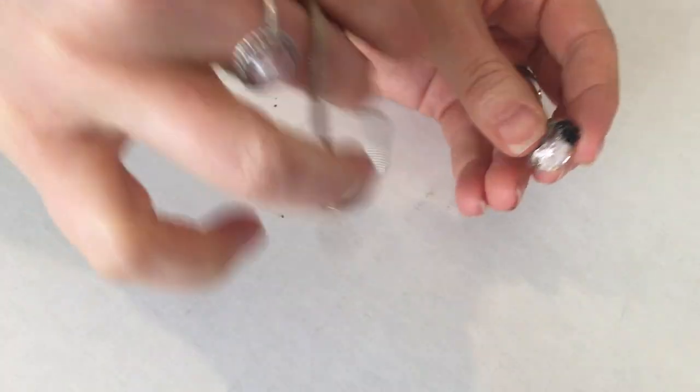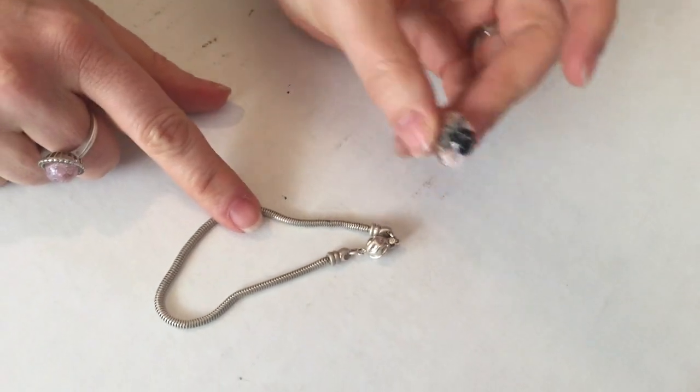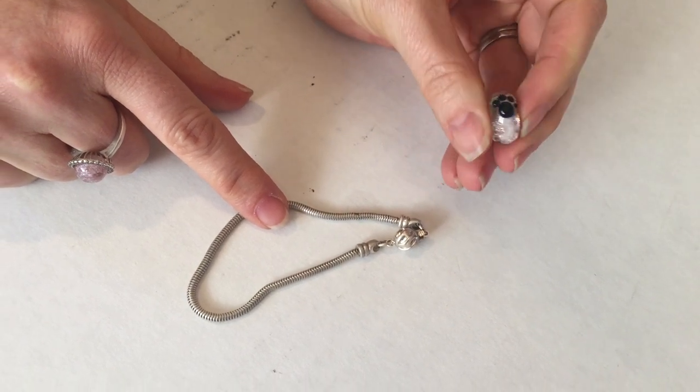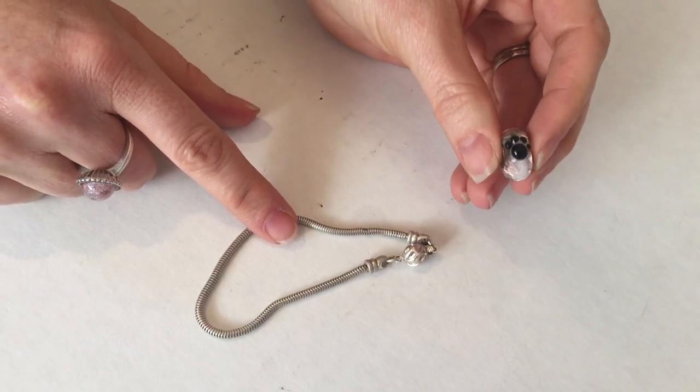This is the big hole bead and it goes on a big bracelet like this. And this one is a pet memory bead. This is actually my bead. It has my dog's ashes in it.